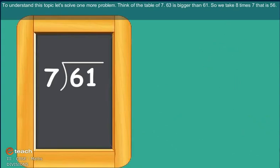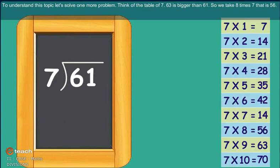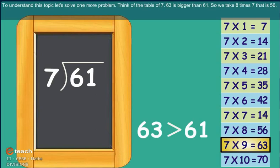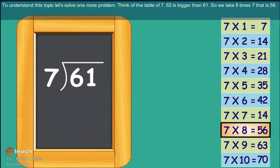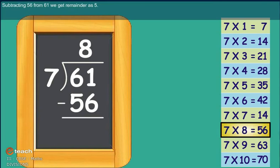To understand this topic, let's solve one more problem. Think the table of 7. 63 is bigger than 61. So we take 8 times 7, that is 56. Subtracting 56 from 61, we get remainder as 5.